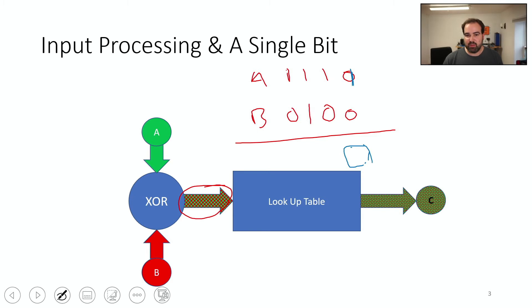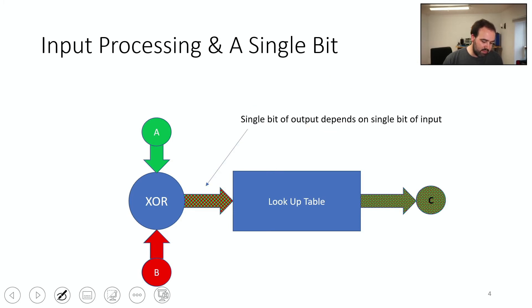So as part of these algorithms, what we're going to do is we're going to introduce this lookup table that sort of breaks that connection. So that lookup table means that we no longer have a single bit of output depending on a single bit of input.